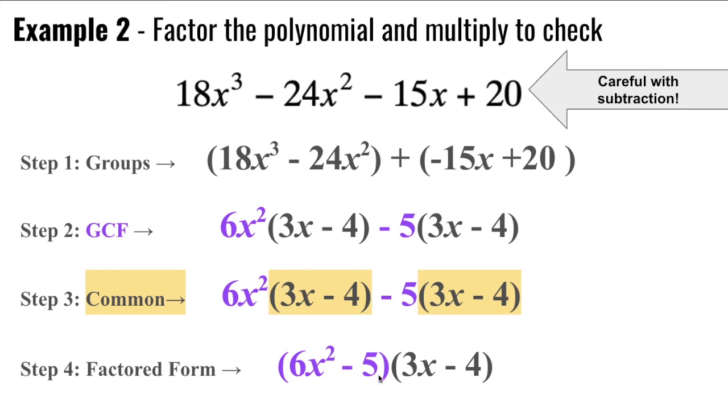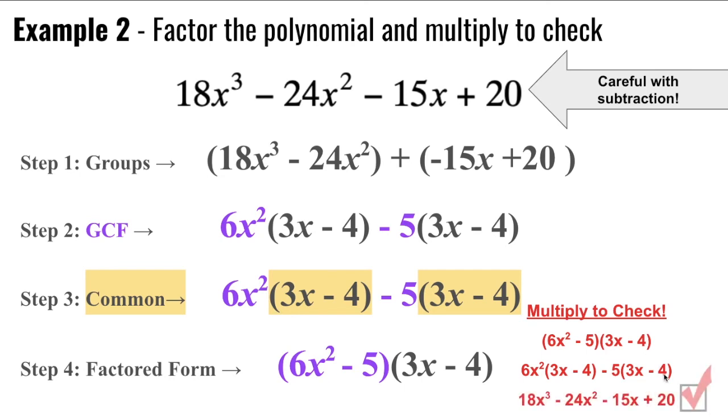Let's multiply to check using double distribute. 6x squared times 3x is 18x to the third, 6x squared times 4 is 24x squared, negative 5 times 3x is negative 15x, and negative 5 times negative 4 is positive 20. So since I ended up with what I originally started with, I know that this factored form is correct.